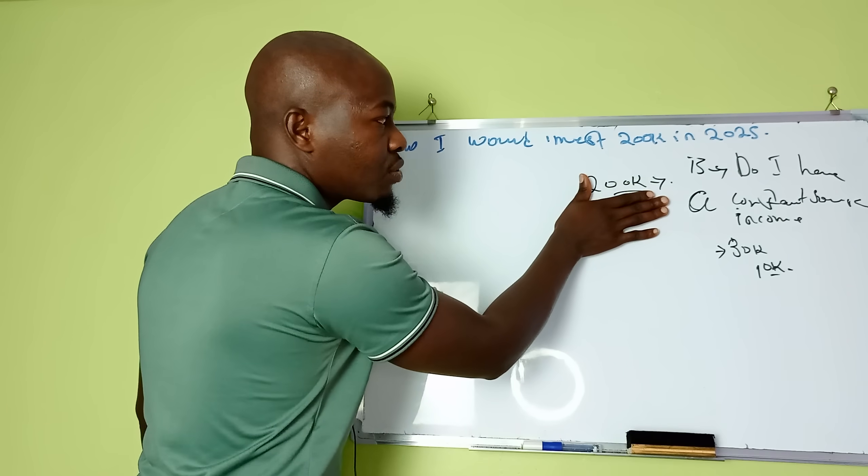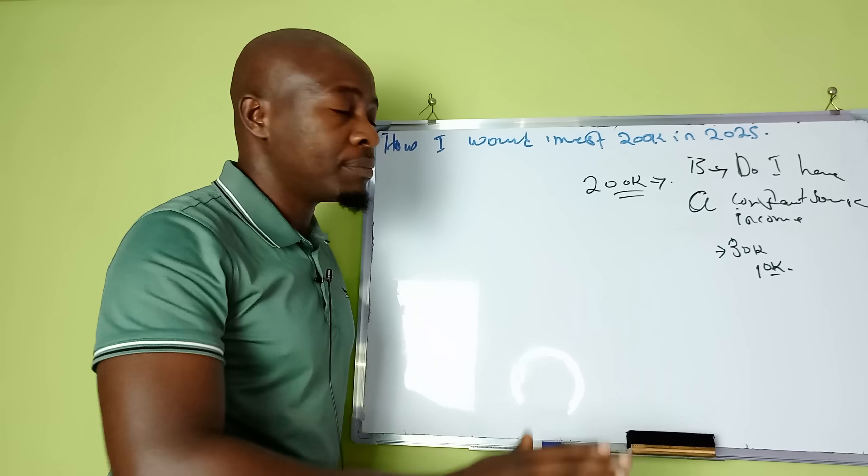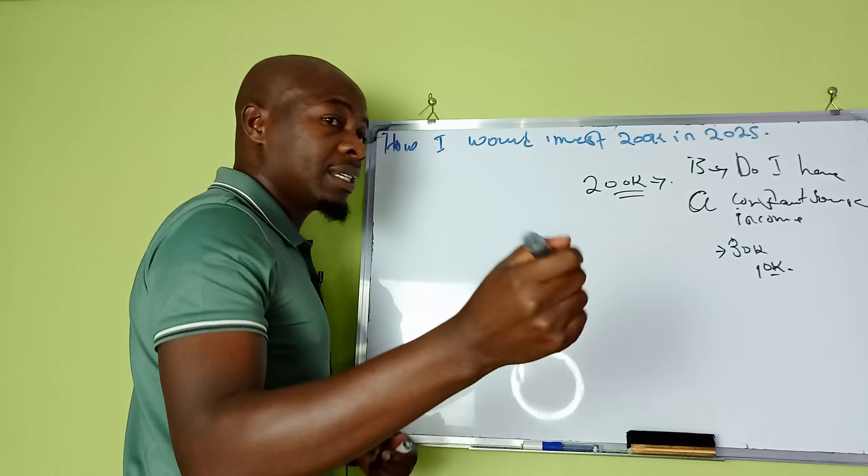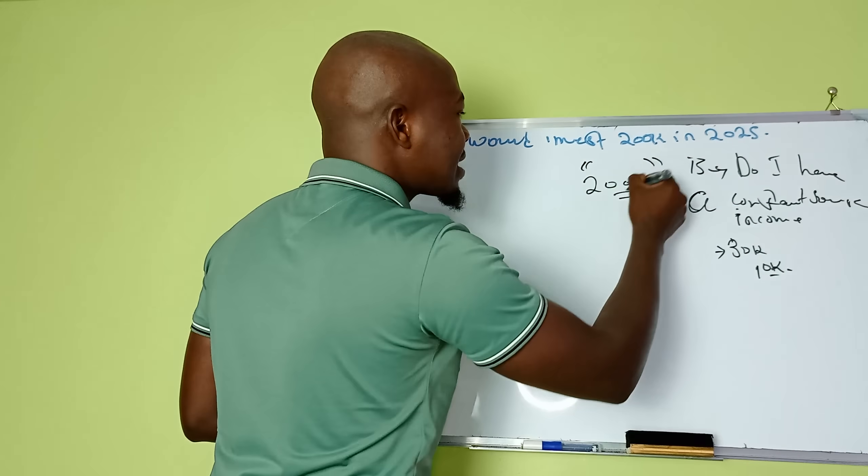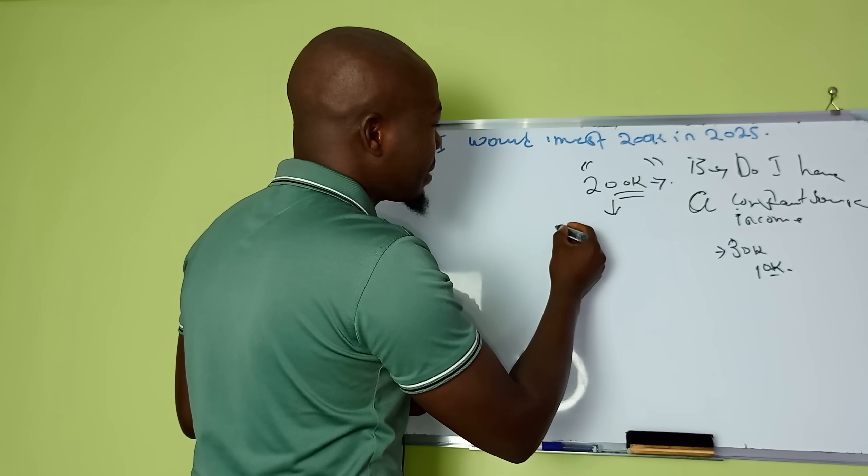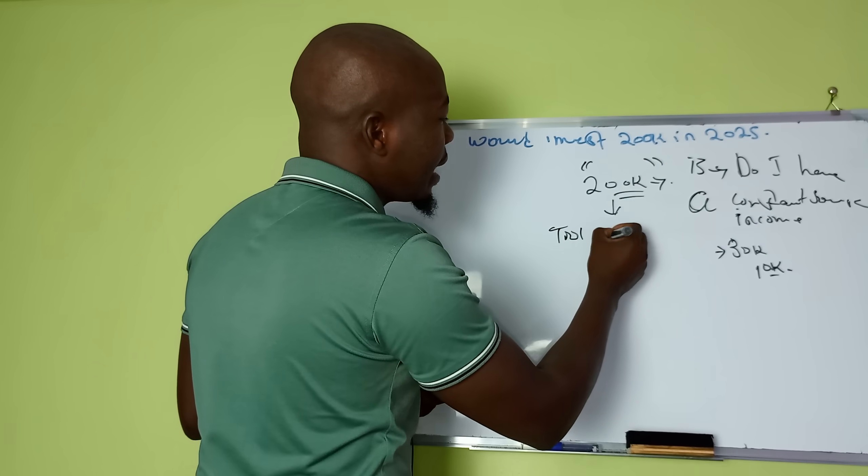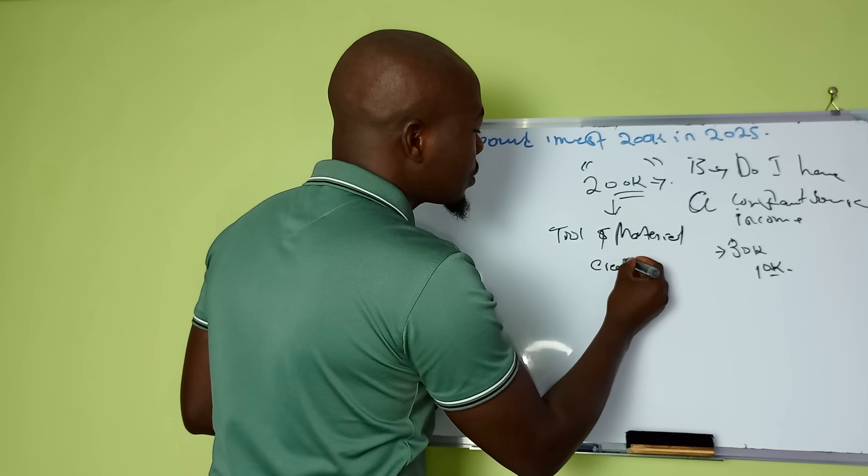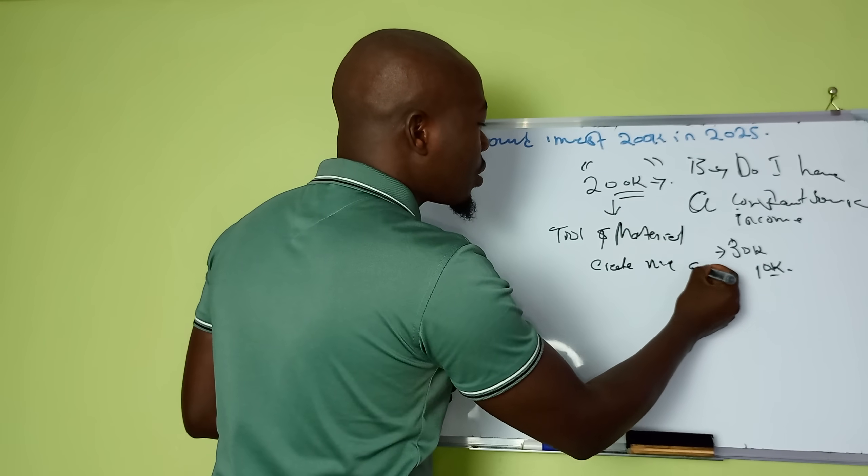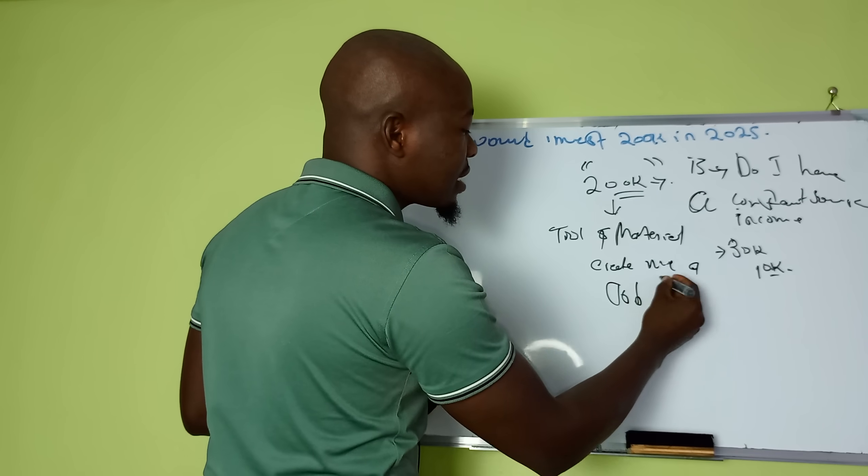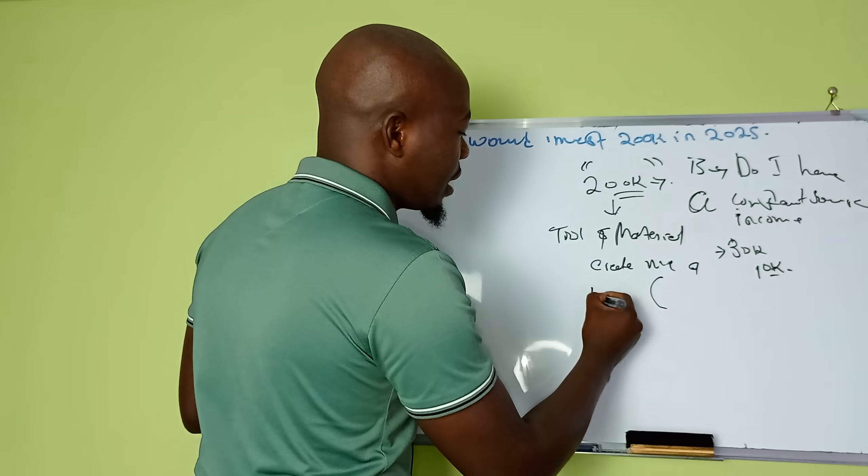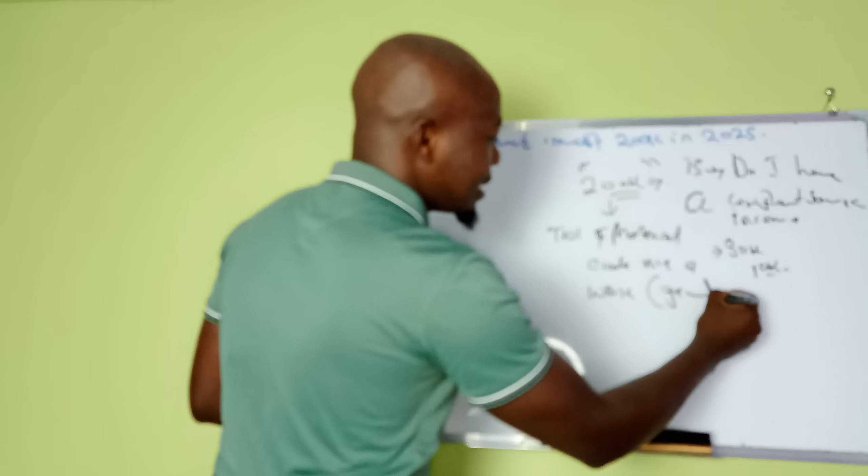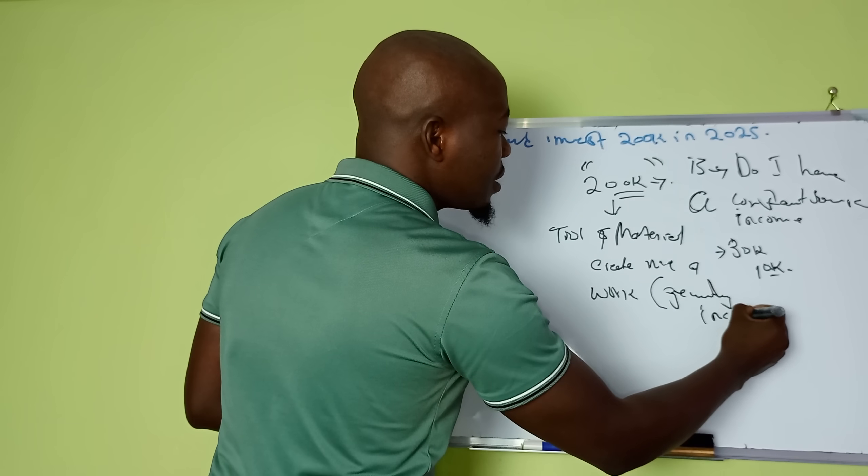Therefore, the way I will approach this 200,000 is differently because I'm going to treat this one as a tool. Listen, I'm going to treat this one as a tool or tool and material. Tool and material. To do what? To create me a job. A job in this regard. Well, I prefer using the term work. To create me that is generating me income.